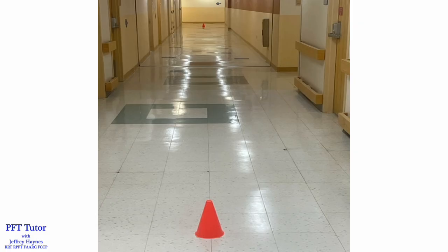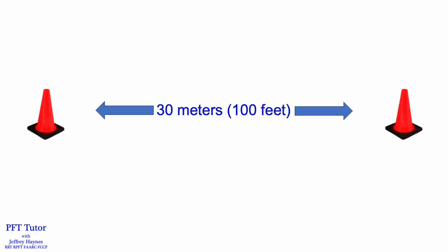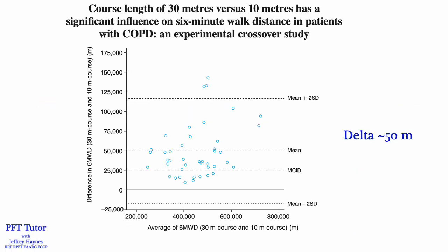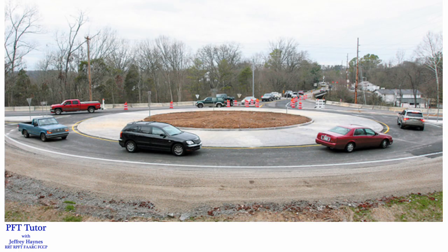A 6-minute walk test is not performed on a treadmill. It should be performed in a low-traffic hallway with course markers placed at each end. Ideally, the course should be 30 meters or 100 feet in length. The course length is important because a shorter course reduces the 6-minute walk distance — in a study of patients with COPD, the difference was 50 meters less when a 10-meter course was used instead of a 30-meter course, because the patient spends more time turning around the cones. Just like a race car, patients cover more distance with longer straightaways.